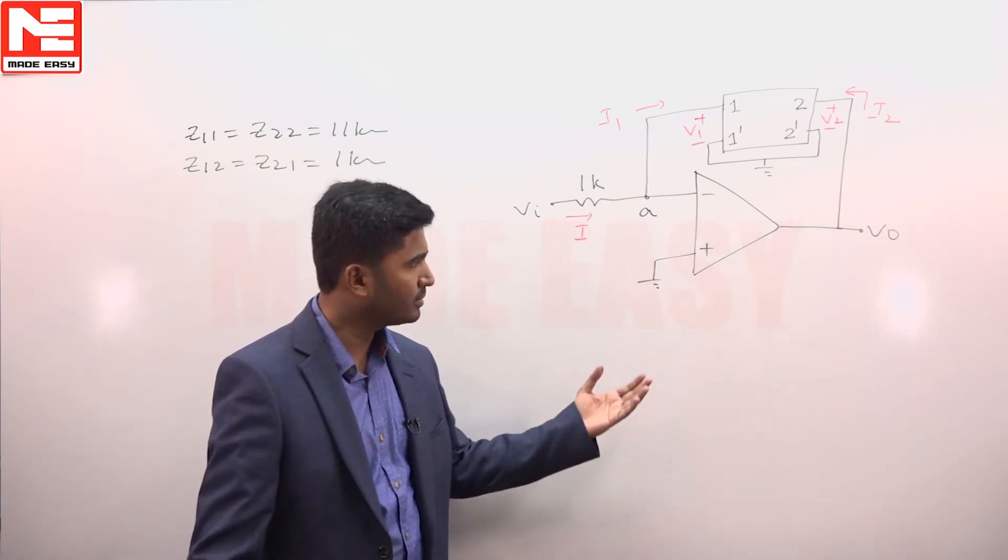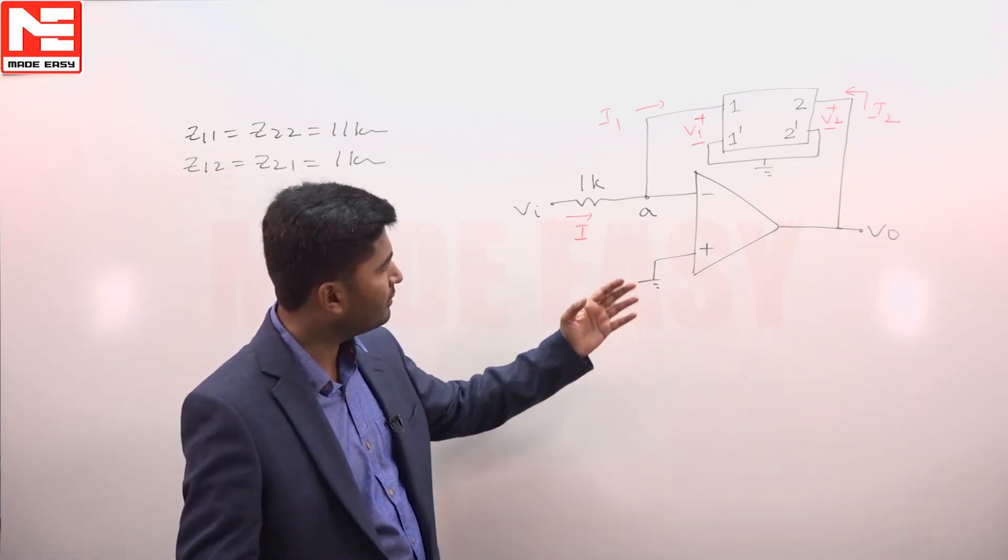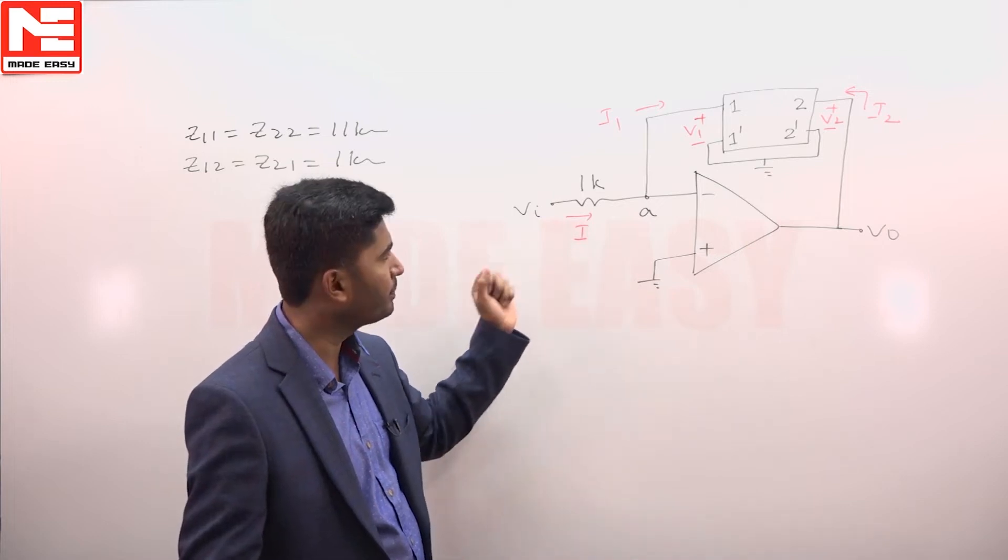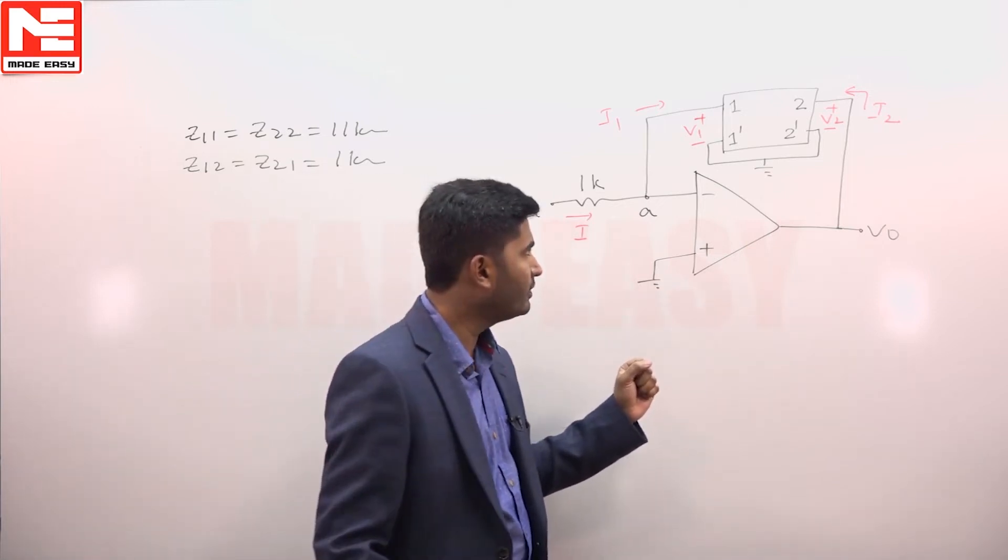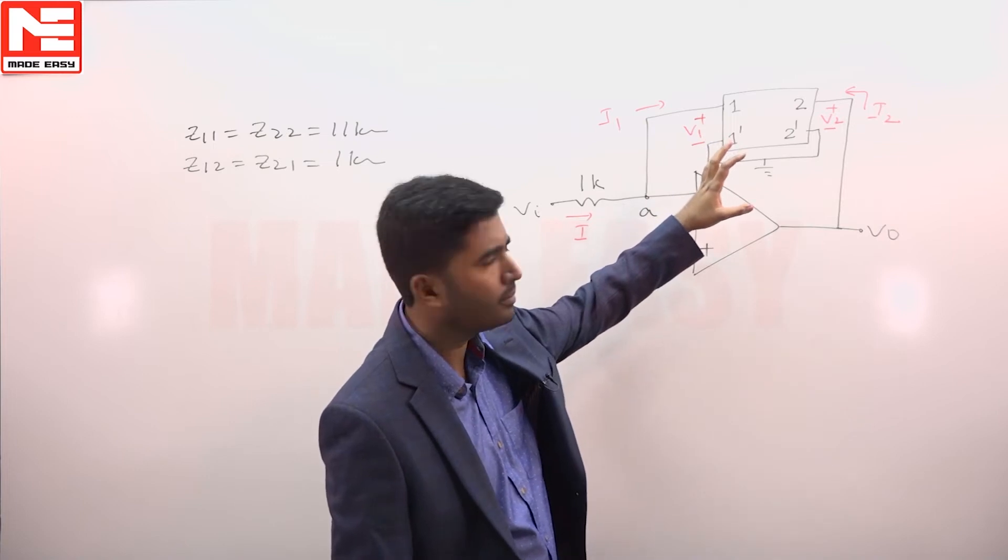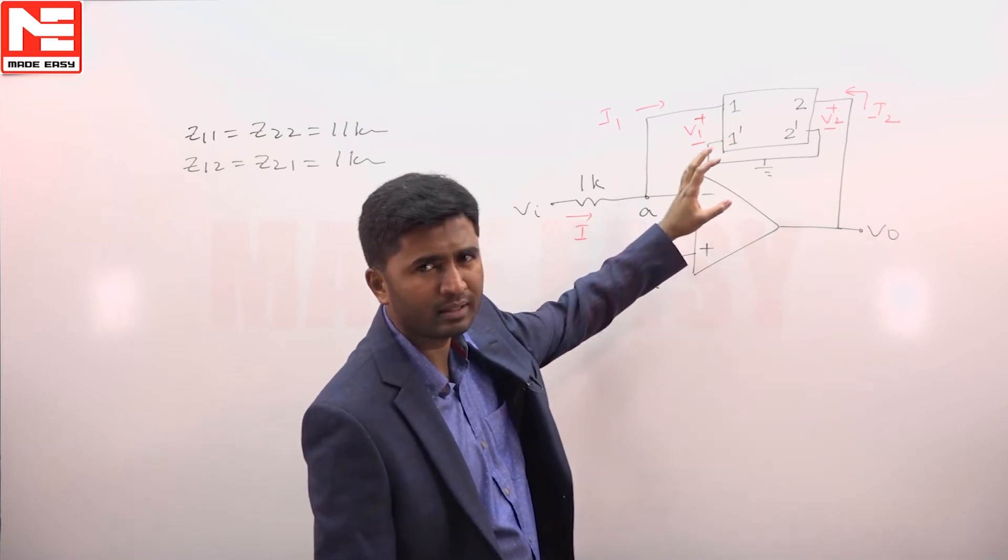In this op-amp circuit we are supposed to calculate the gain V naught divided by V i. And in the feedback network some two port network is connected whose z parameters are given in the question.